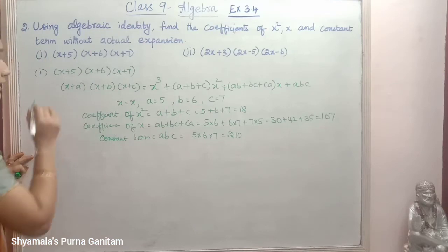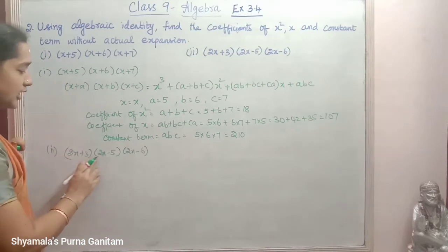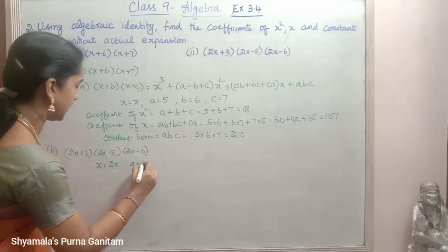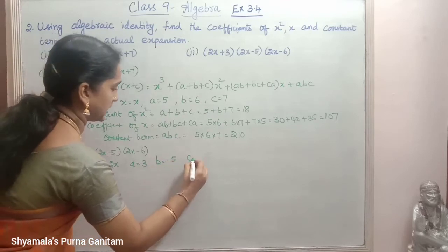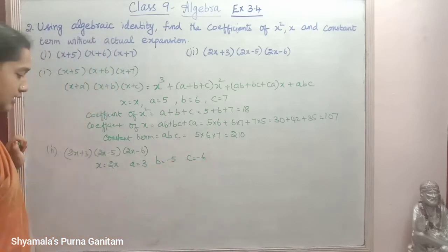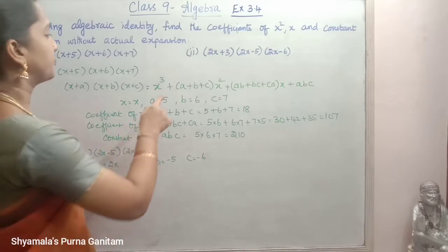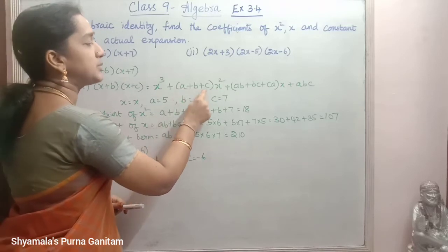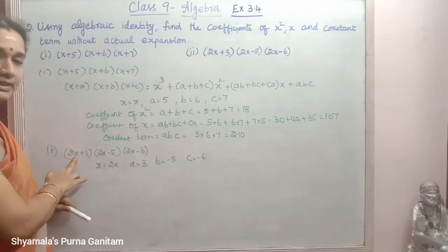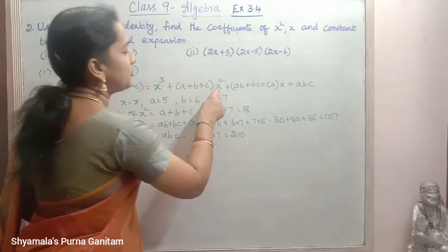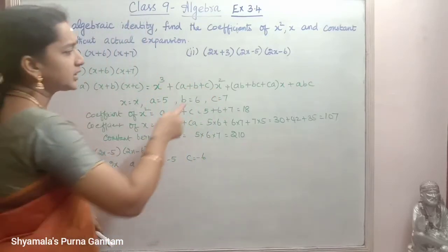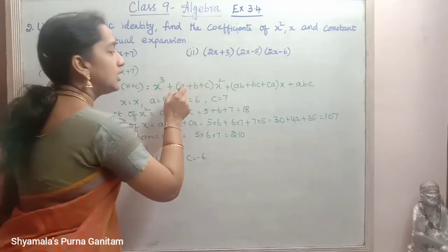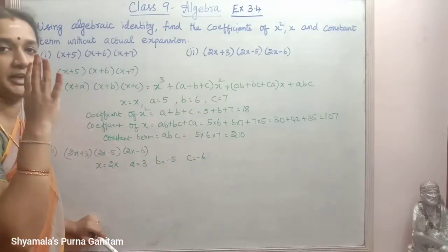The same procedure we will follow for the next sum. The sum is (2x+3)(2x-5)(2x-6). Here x is replaced by 2x. a is equal to 3, b is equal to -5, c is equal to -6. So the coefficient of x squared will be (a+b+c) but since we have 2x, we take (2x)² which gives 4x².